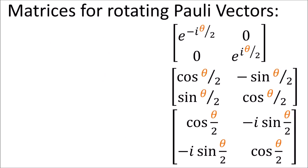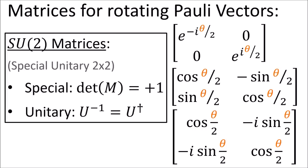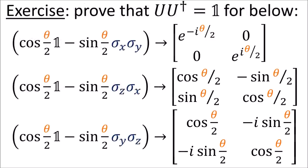These transformations match exactly what we'd get from a rotation matrix in three dimensions by an angle theta in the xy plane. So our two-sided transformation of our polyvector worked. We can get similar matrices for rotations in the yz plane and zx plane. It turns out that all of these matrices are special unitary 2x2 matrices, or SU(2) matrices, meaning they are all unitary and have determinants of one. As an exercise, you can try proving that all of these matrices are unitary by multiplying them by their Hermitian conjugate and getting the identity matrix.